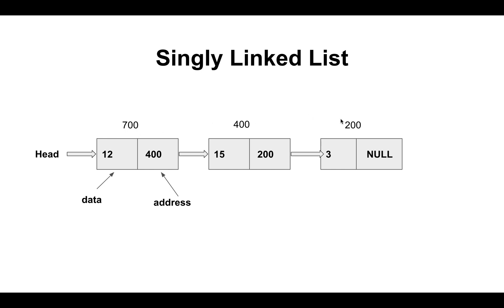Here you are seeing 700, 400, 200 — these are just dummy addresses. In an actual scenario the address is in hexadecimal format. These integer values are just for understanding purposes. The first node's data part contains 12 and the address part contains 400, pointing to the second node. The address part of the second node points to the third node at 200. In a singly linked list we can only traverse in one direction.